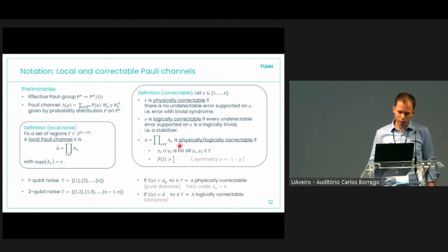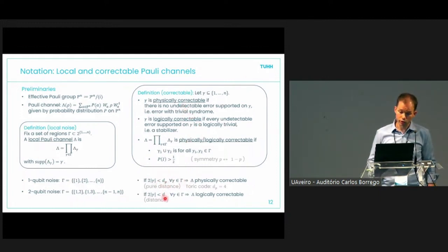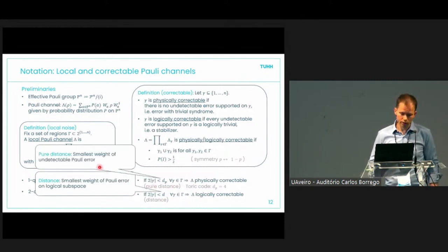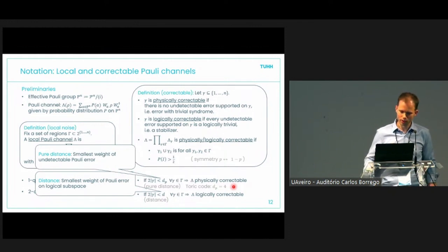The capital gamma is correctable if all these regions are correctable, giving us physically and logically correctable definitions. This relates to the distance and pure distance of the code: if twice the size of any region is smaller than the pure distance, the channel is physically correctable; if smaller than the distance, it is logically correctable. The pure distance is essentially the weight of the smallest stabilizer, which equals four for the Toric code.